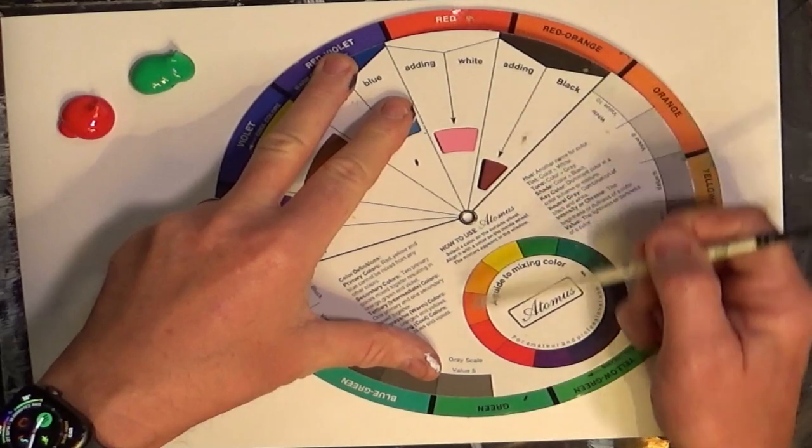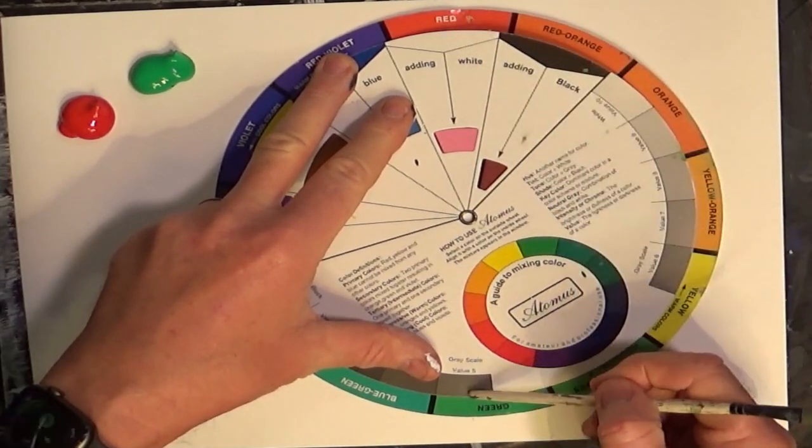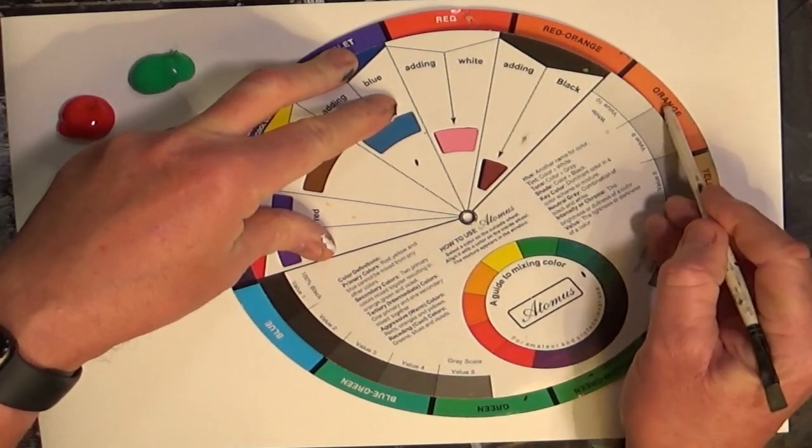You will see that the opposite of red on the color wheel is green, so that's its complement. So the opposite of orange is blue.